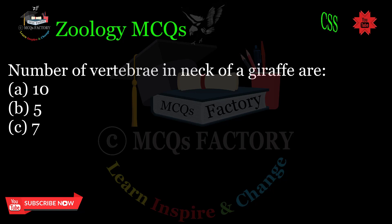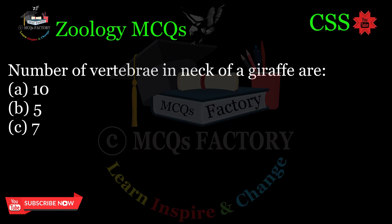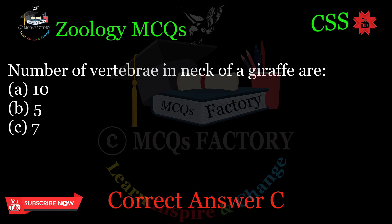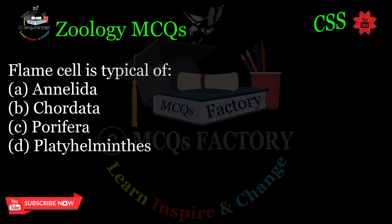The number of vertebrae in the neck of a giraffe are: A. 10. B. 5. C. 7. Correct answer: C.